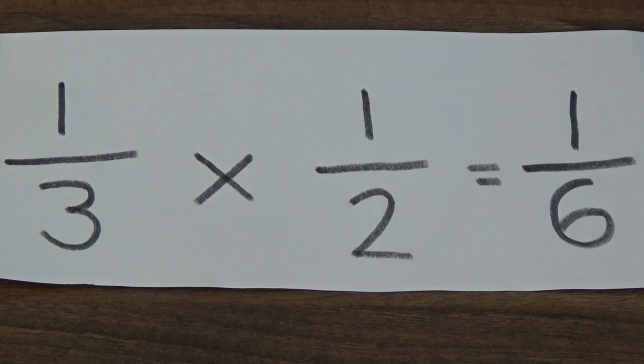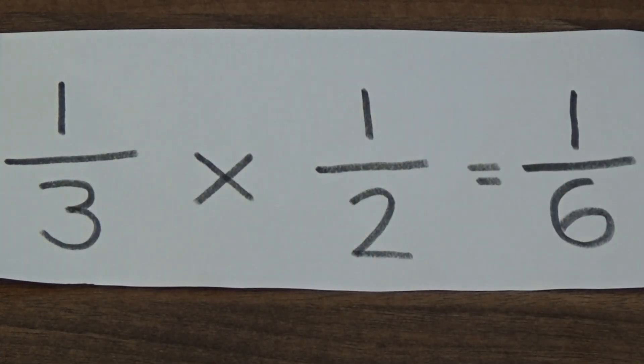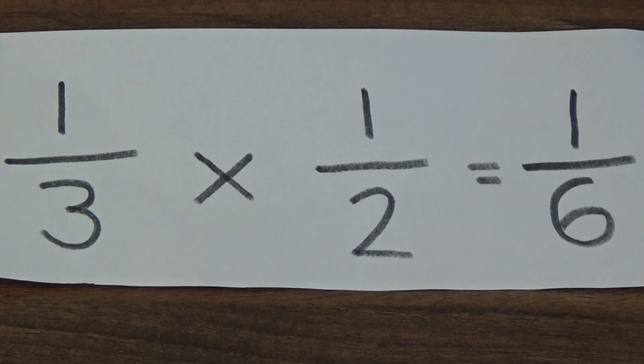If we look at the calculation, we can see that if we multiply the numerators together, we get one times one, which is one. And if we multiply the denominators together, we get three times two is six. So one third multiplied by one half equals one sixth.